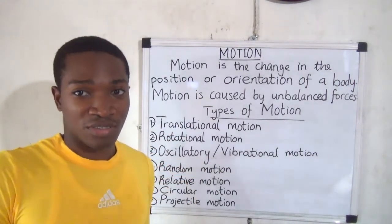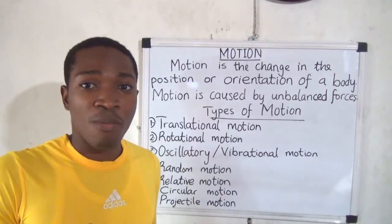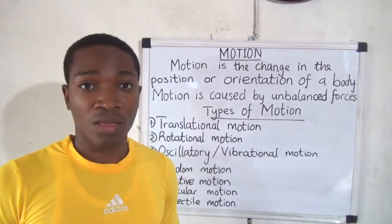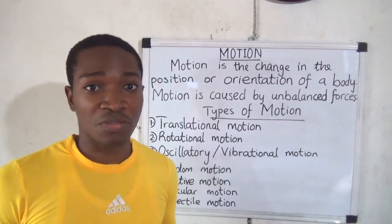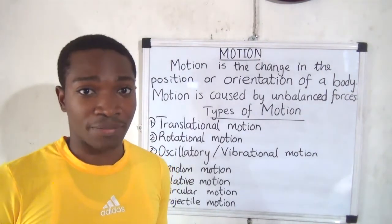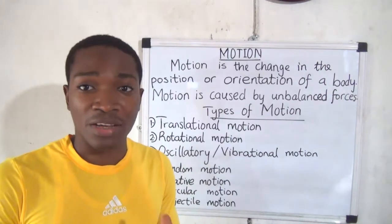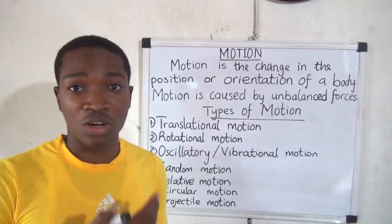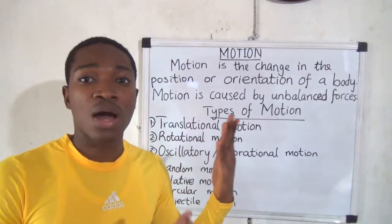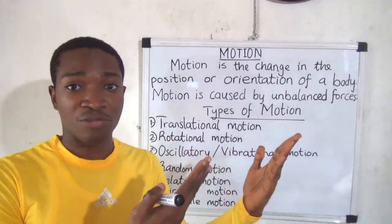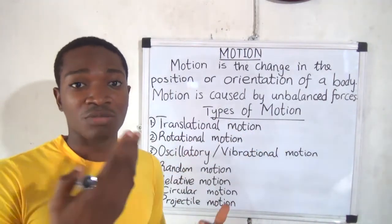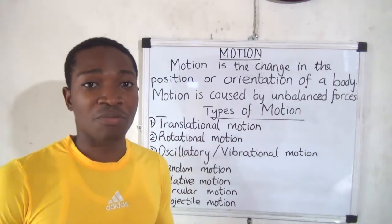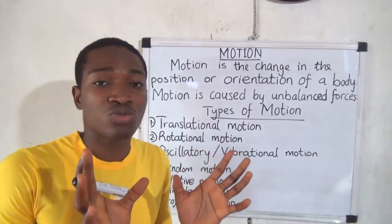When an object vibrates in a to-and-fro manner, that is vibration. Random motion is the movement of an object in a disorderly manner — we don't have a regular pattern for random motion. Relative motion is when an object moves relative to another. You have to consider two objects when discussing relative motion, not just a single object.